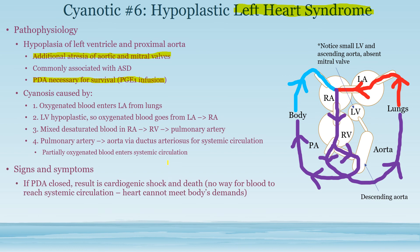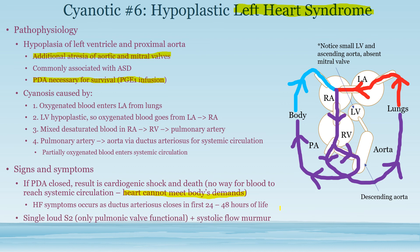When the PDA closes, which happens in 24 to 48 hours after birth, the patient will die because there will be no blood going to the systemic circulation, and the heart will not be able to meet metabolic demands. So you keep it open using PGE1. Heart failure symptoms occur because the heart can't pump into systemic circulation, and these will happen in the first 24 to 48 hours of life — so PGE1 is absolutely necessary.